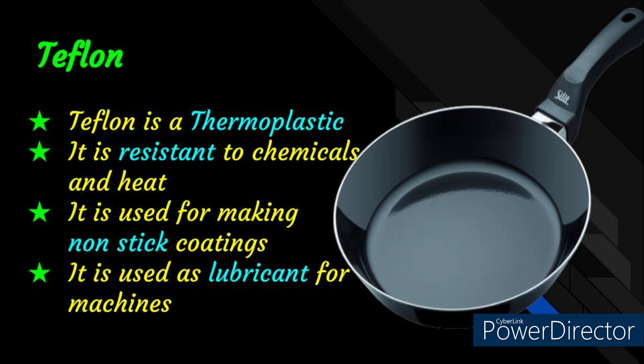Teflon is formed by the polymerization of tetrafluoroethene molecules and it is a thermoplastic. Teflon is resistant to chemicals and heat. It is used for making non-stick coatings of utensils and also used as a lubricant for machines.